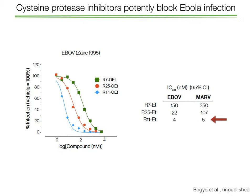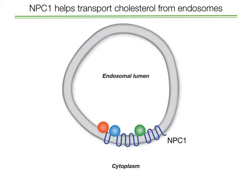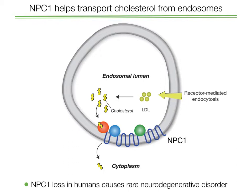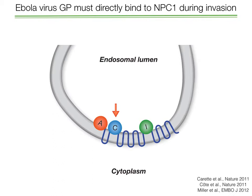Now we turn to the second protein I mentioned earlier: NPC1, or Niemann-Pick C1, which is a protein that helps transport cholesterol from endosomes. This is a normal, ancient cellular protein that for billions of years has been moving cholesterol that enters the cell across the endosomal membrane. When this gene is lost in humans, it causes a rare neurodegenerative disorder called Niemann-Pick disease because cells accumulate cholesterol. But we found, along with collaborators, that NPC1 is also acting as a receptor for Ebola virus — once Ebola goes into endosomes and gets cleaved by cysteine proteases like cathepsin-L, it can bind directly to the NPC1 protein.